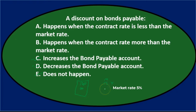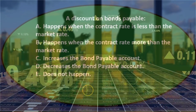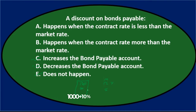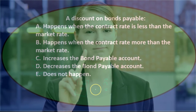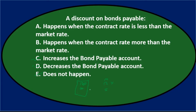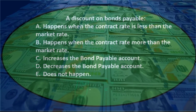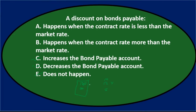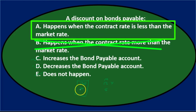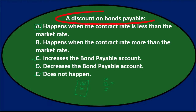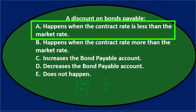On the other hand, if the market rate were only five percent, investors would gladly pay the thousand dollars for a ten percent bond. But now we'd say, since you can only get five percent elsewhere and this is a ten percent bond, we'd issue it at a premium — meaning we want more than a thousand dollars. So for a discount, the contract rate must be less than the market rate. Final answer: A — a discount on bonds payable happens when the contract rate is less than the market rate.